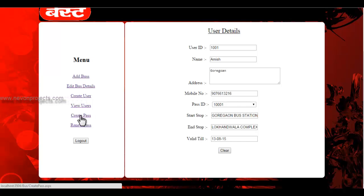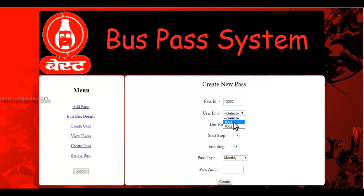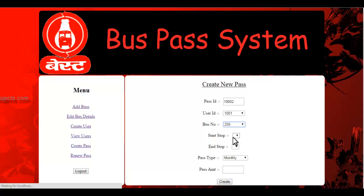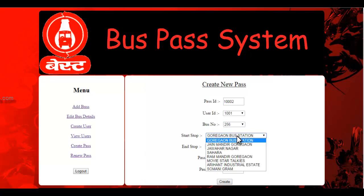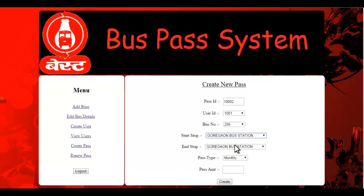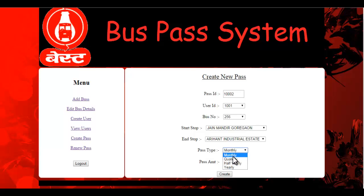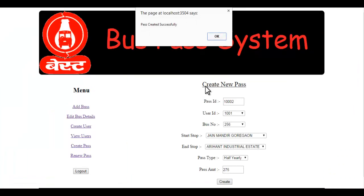The admin can also create a pass for a user. You select the user's ID, the bus number, and the start and end stop. The system shows the payable amount. Since the user pays in cash at the bus station, no credit card details are needed here. Clicking create will generate a new pass.